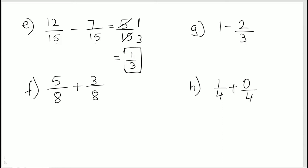Next one, 5 by 8 plus 3 by 8. Same denominators. Add up the numerators. 5 plus 3 is 8, 8 over 8. And I told you that when we have the same number in the numerator and denominator, that equals to 1.